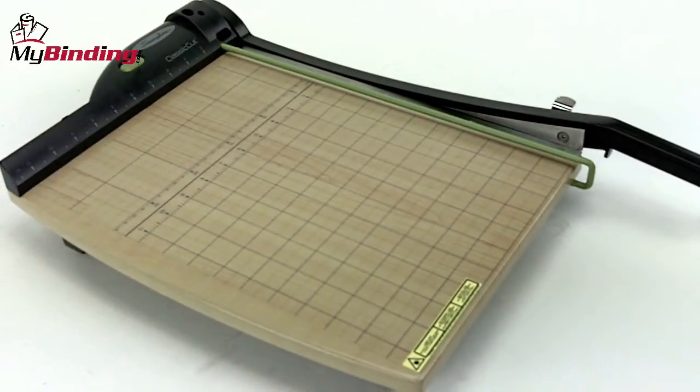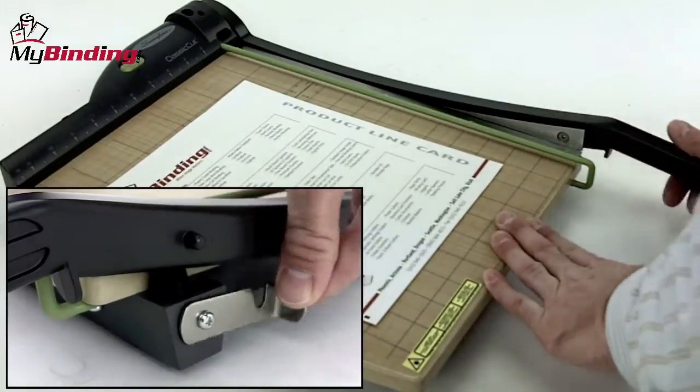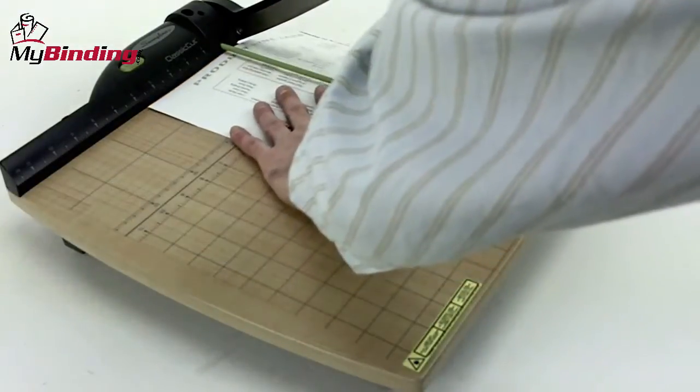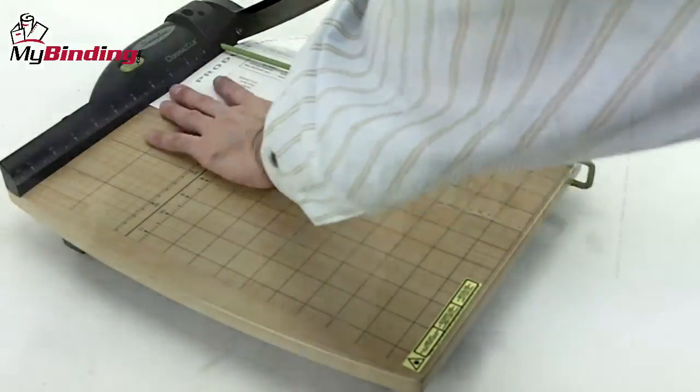As a guillotine style trimmer, it's a great one. Release the lock here and slice through your papers. The grids, everything very helpful, metric as well as US measurements.